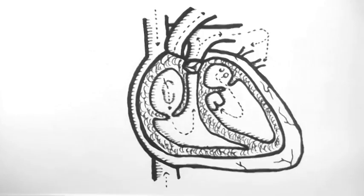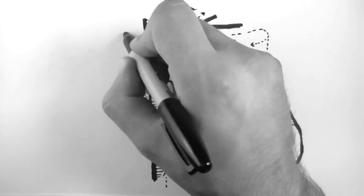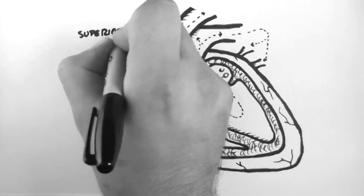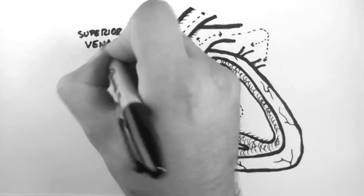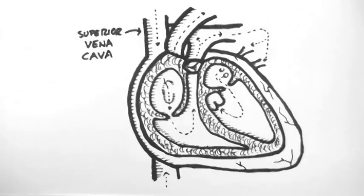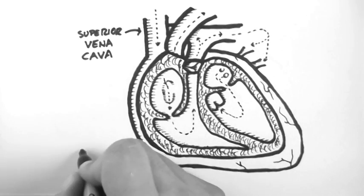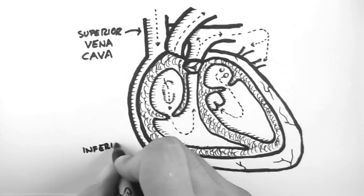Now I'm going to label these vessels now, and the chambers and the valves. So these two vessels are the vena cava. This is the superior vena cava. This is the inferior vena cava.